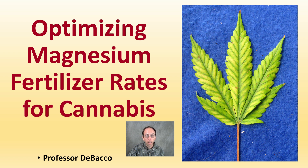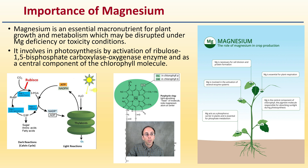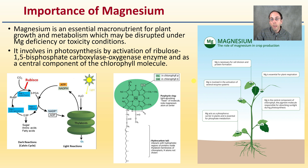We're going to look at magnesium in particular and its importance. It is an essential macronutrient for plant growth and metabolism, which may be disrupted under magnesium deficiency or toxicity conditions. It involves photosynthesis by activation of the ribulose bisphosphate carboxylase oxygenase enzyme, typically referred to as RuBisCO, and as an essential component of the chlorophyll molecule — we can see magnesium located right in the center of that chlorophyll molecule. RuBisCO is important for the photosynthetic process. Magnesium is also important for cell division, involved in the activation of several enzymes, acts as a phosphorus carrier in plants, is essential for plant respiration, and is an essential component of the chlorophyll molecule. So many, many roles that magnesium plays.